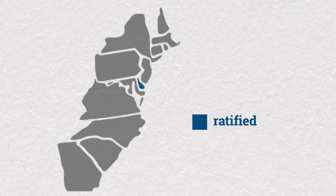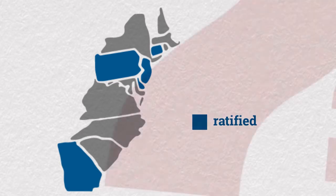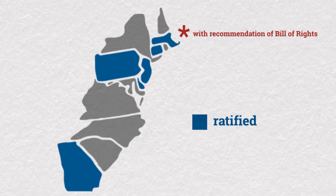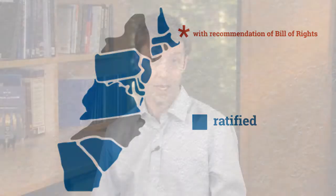Five states — Delaware, Pennsylvania, New Jersey, Georgia, and Connecticut — ratified the Constitution pretty quickly and easily. But after that it gets much harder. Massachusetts ultimately ratifies with a recommendation that a Bill of Rights be added, and four of the next five ratifying states do the same thing. So when the Constitution does get ratified — New Hampshire being the ninth state in June 1788 — one of the first things Congress does is draft a list of amendments and send them out to the states. There were actually 12 of these; two didn't make it. The ten that did are what we now call the Bill of Rights.